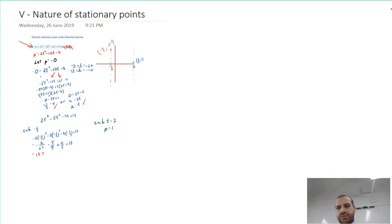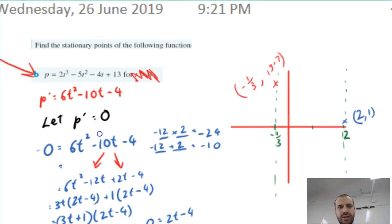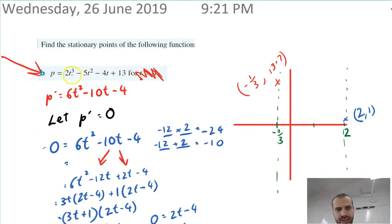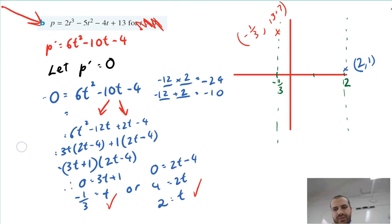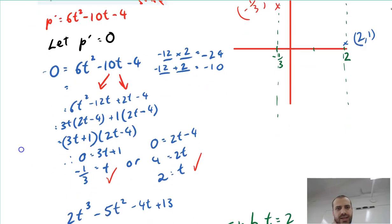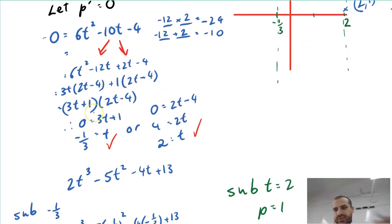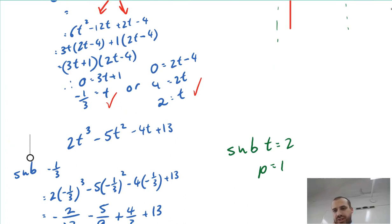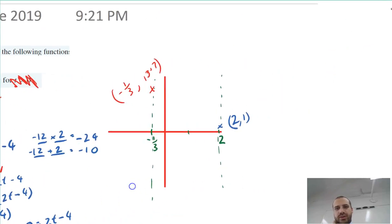In this video we're going to be finding the nature of stationary points. In our previous video we had a function p equals this and we found the stationary points. The stationary points are negative one third, 13.7 approximately and 2.1.